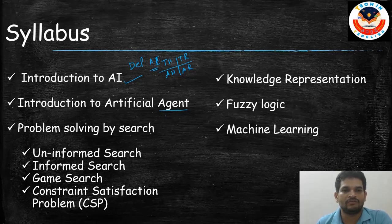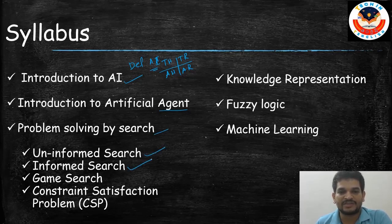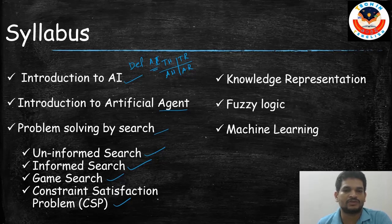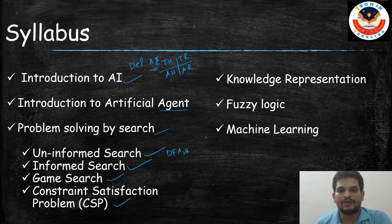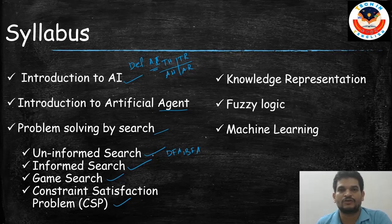Then we will look at Problem Solving by Search. This includes uninformed search, informed search, game search, and constraint satisfaction problem. In uninformed search, we have different algorithms like DFS (Depth First Search), BFS (Breadth First Search), Iterative Deepening Search, and Bi-directional Search — all covered under uninformed searching strategies.